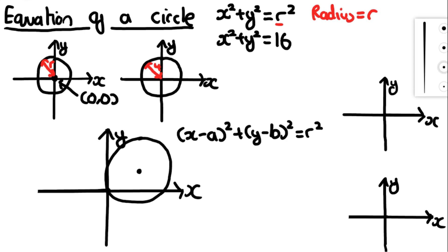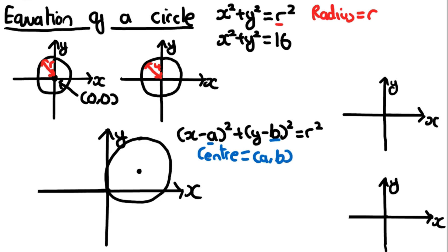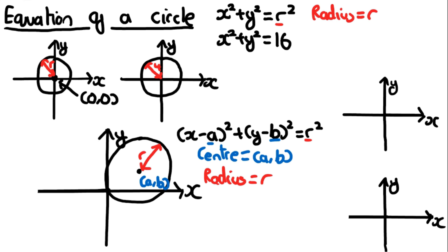You need to get used to this equation as it comes up a lot. Let's break it down — what does it actually mean? The center of this circle is going to be (a, b). Even though you see minus a and minus b in the brackets, the center is just (a, b) — it's the opposite sign. The radius works exactly the same as before: the radius equals r, which is the square root of the constant on the other side.